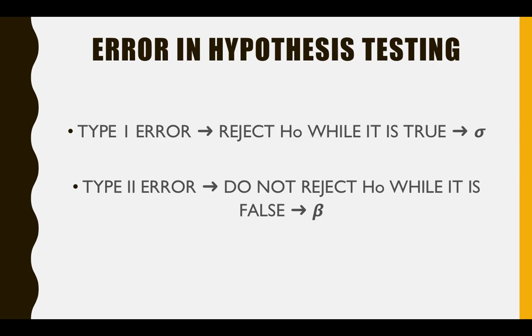Before we can write down the hypothesis, we need to select our sample. Our sample comes from a population. A population is a larger group than a sample — a sample is part of a population. For example, a population is the total number of students from the faculty of business, whereas a sample could be just students from BBA Insurance or a few students from BBA Transport. Sometimes when we pick our sample, we might commit error — called Type 1 error and Type 2 error.